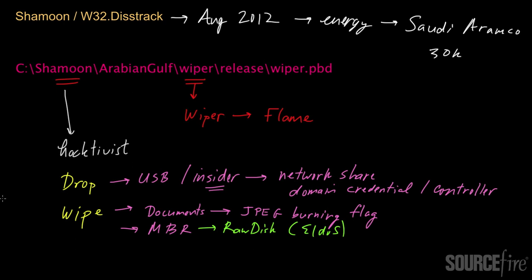The last phase of Shamoon was the reporting phase, where results of the previous operations are reported back to a central server for record keeping purposes. Uniquely, the Shamoon server to which reporting was done was actually located internally on the same network as where the threat was deployed.